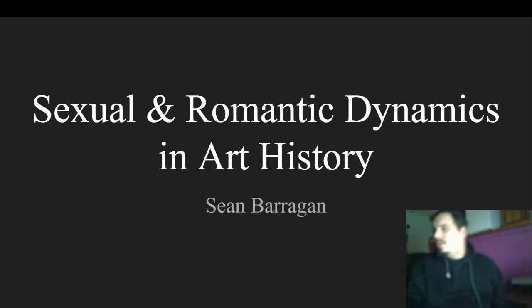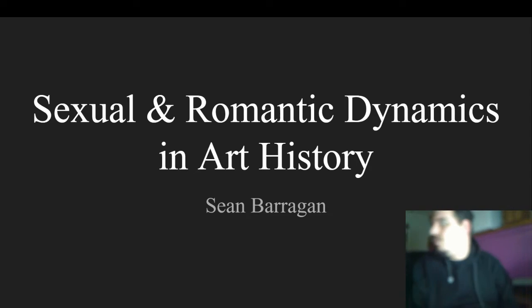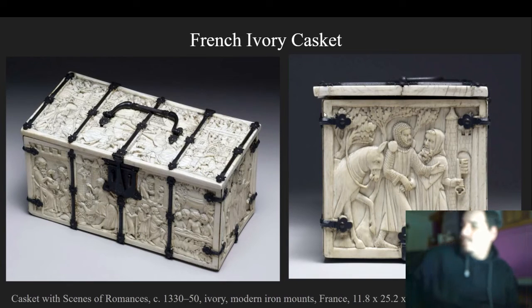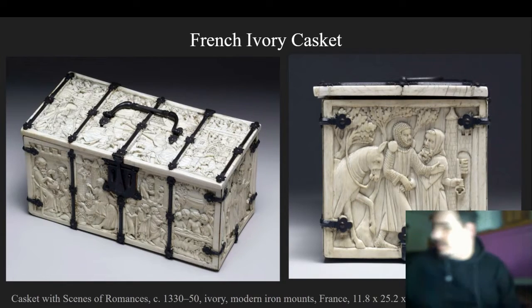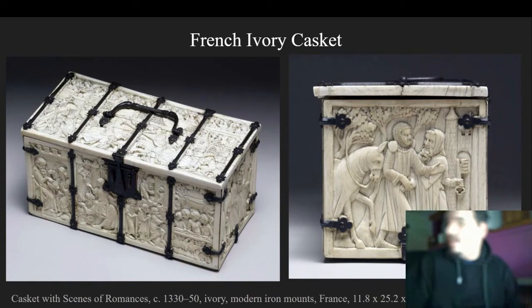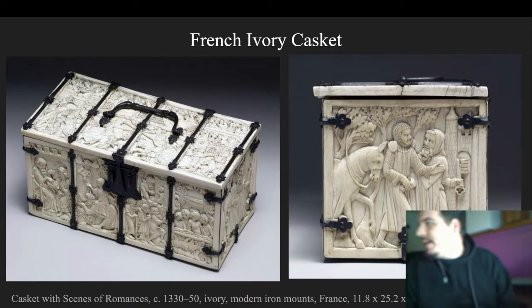Hi everyone, this is Sean Berrigan and this is my presentation on sexual and romantic dynamics in art history. It was my chosen topic for this class. We'll start with the French ivory casket. This was carved from 1330 to 1350 out of ivory. It was a gift that a man would give to a wife when he proposed or when they were married, and it was full of chivalric iconography.